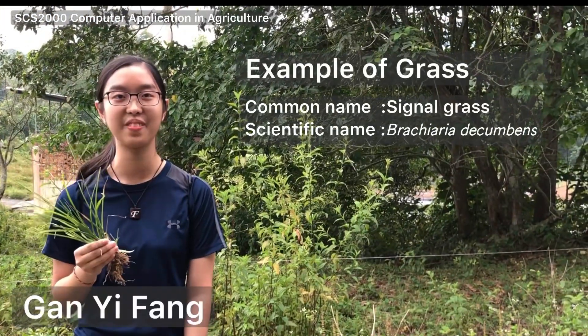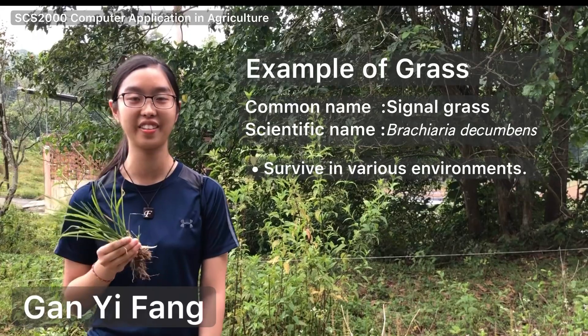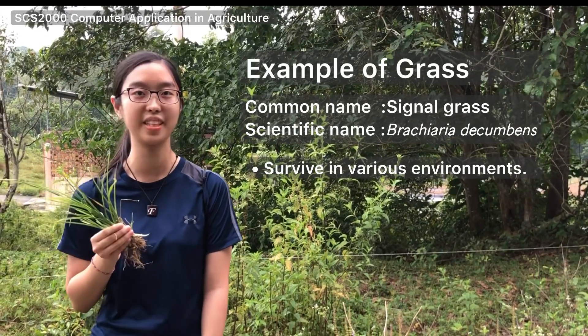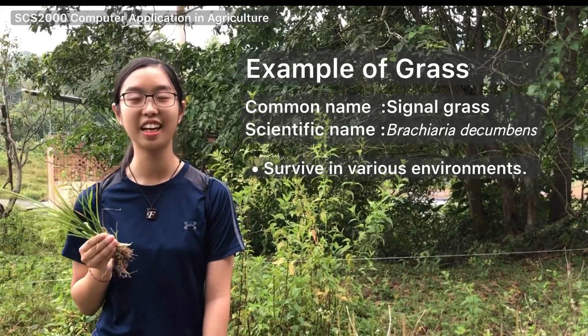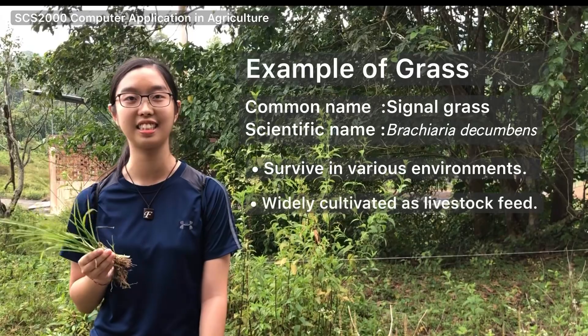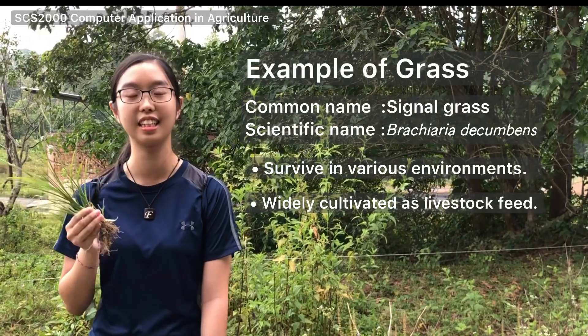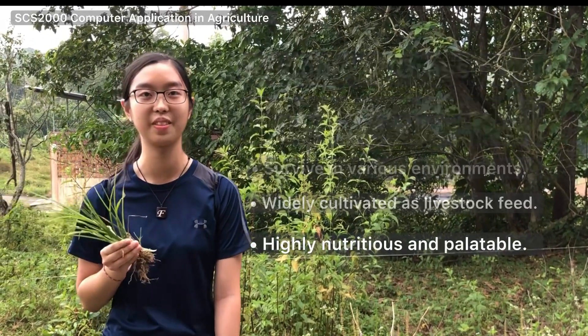Linder grass can be planted in many environments such as swamp areas, shady forests, and also semi-desert areas. It is widely cultivated as livestock feed because it is highly nutritious and tolerable.